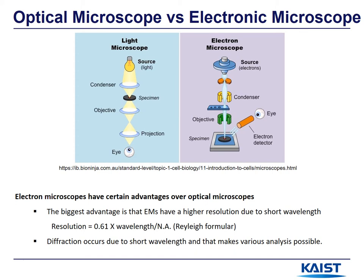The wavelength of electrons is shorter than that of light. Among electron microscopes, TEM has very high resolution. Also, there is diffraction, so various analyses can be done.